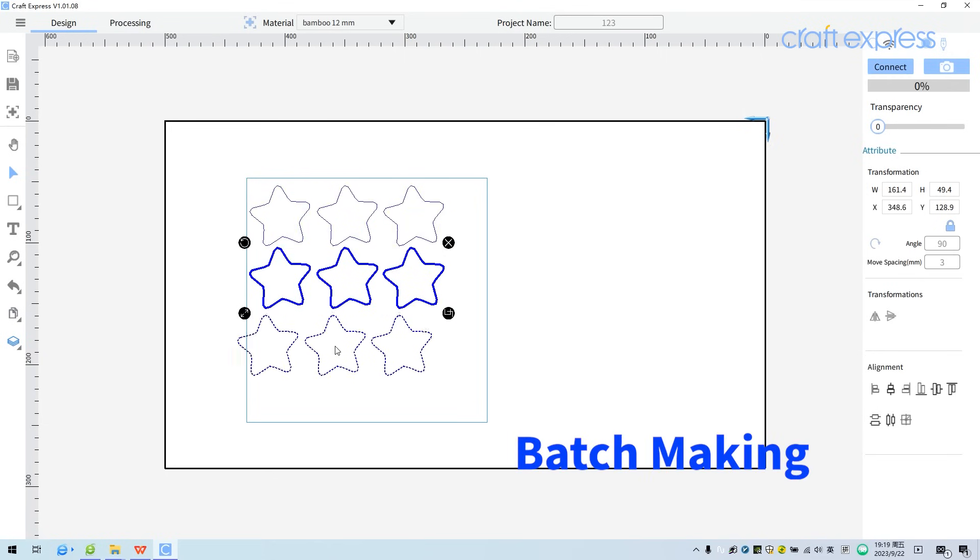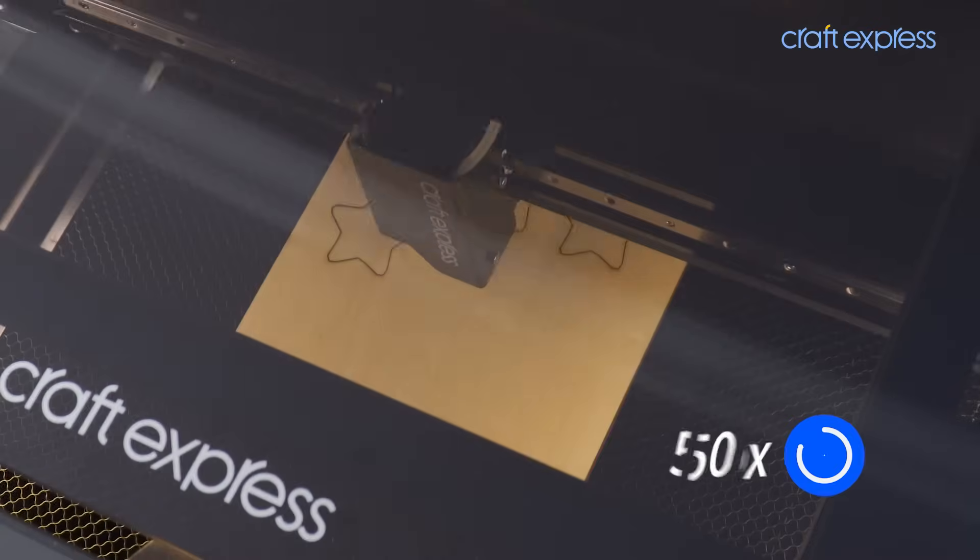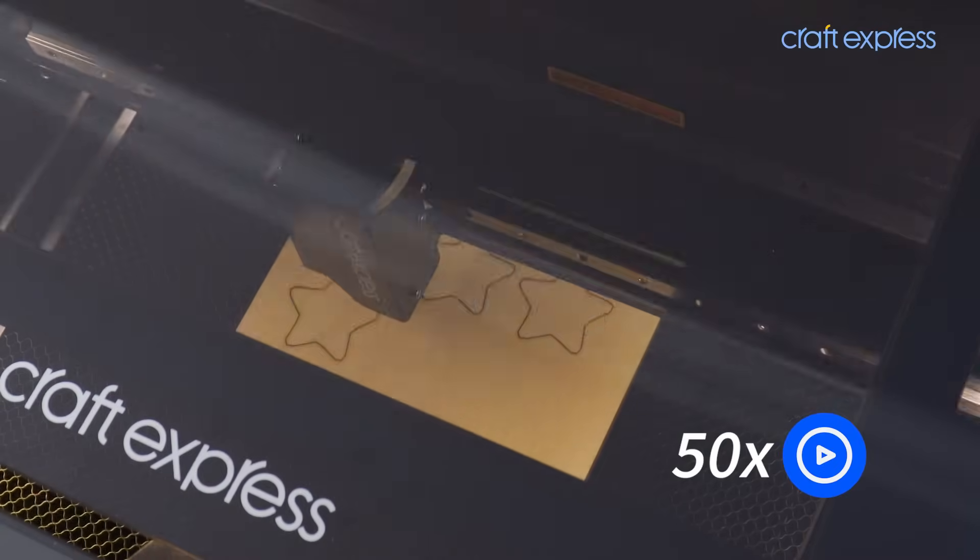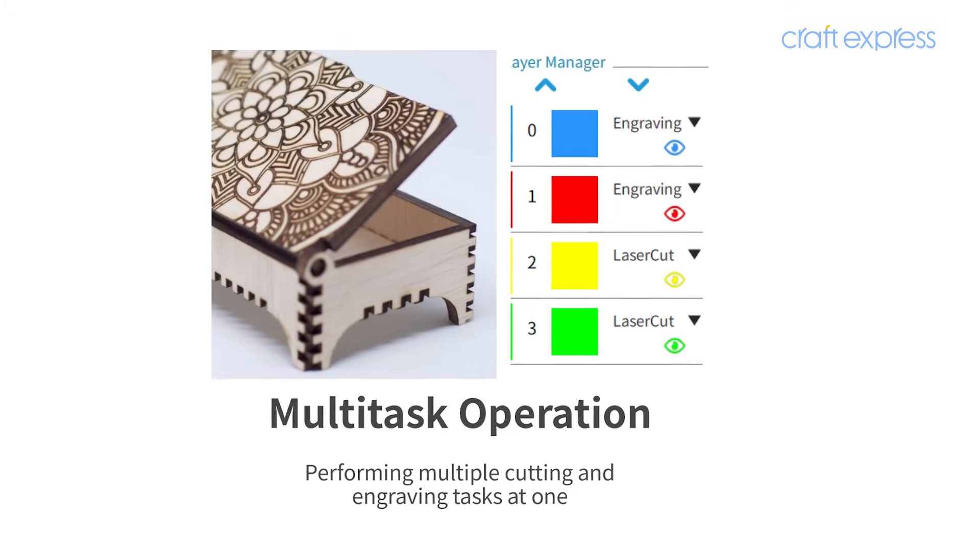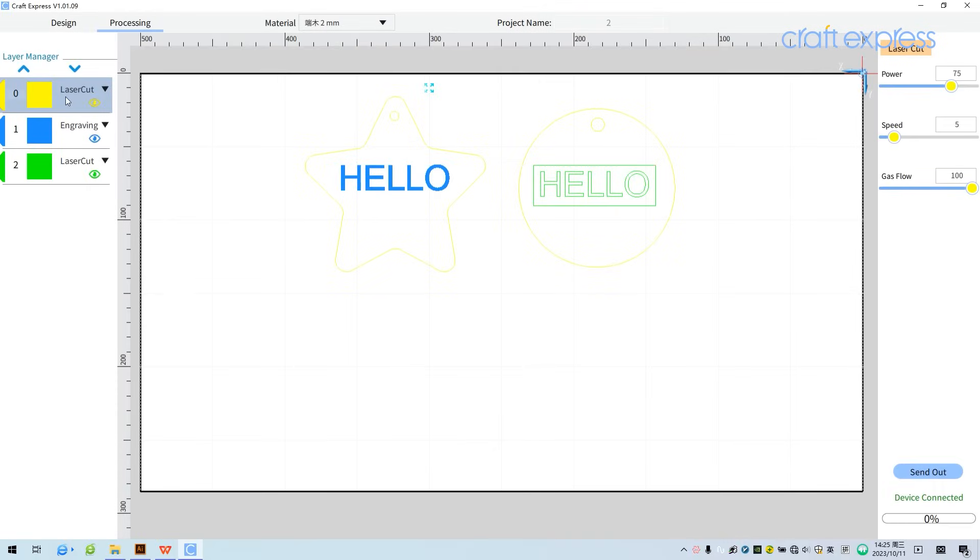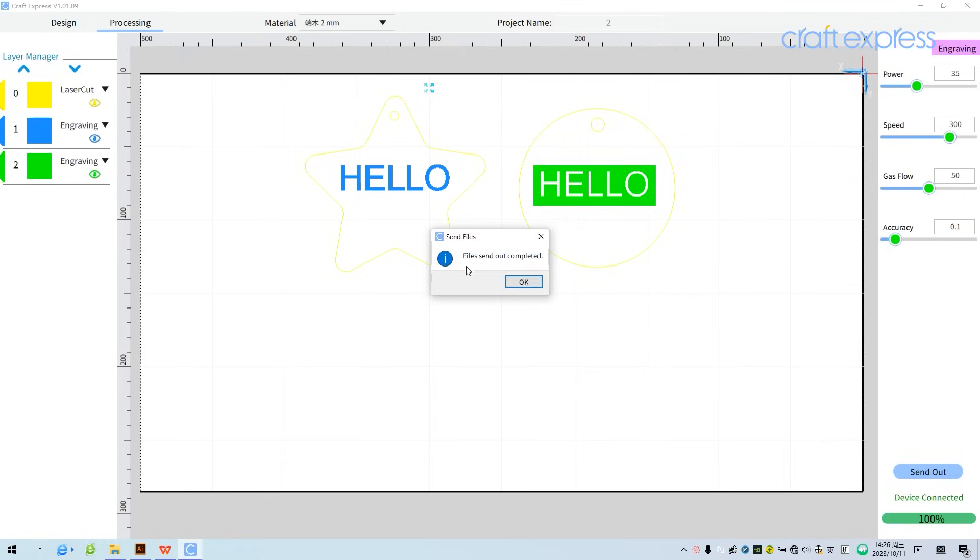The machine completes multiple cutting or engraving tasks at once, improving batch-making efficiency. Multitask operation creates up to eight layers at the same time, performing multiple cutting and engraving tasks simultaneously.